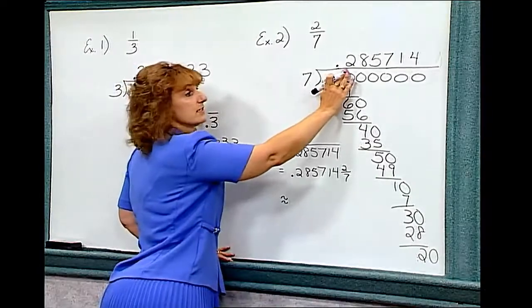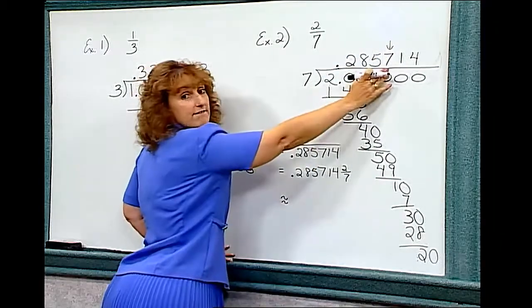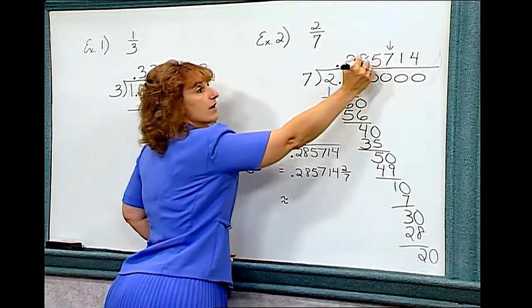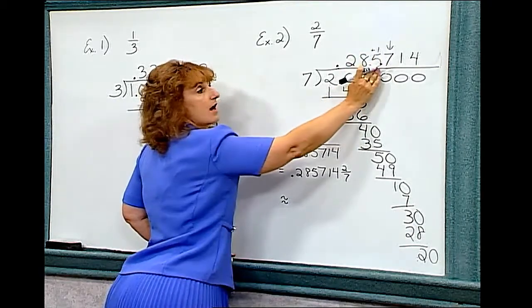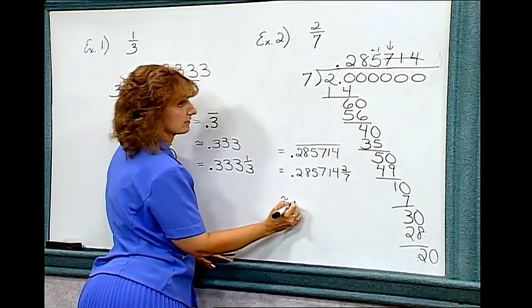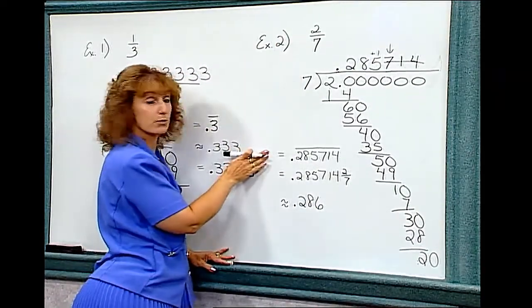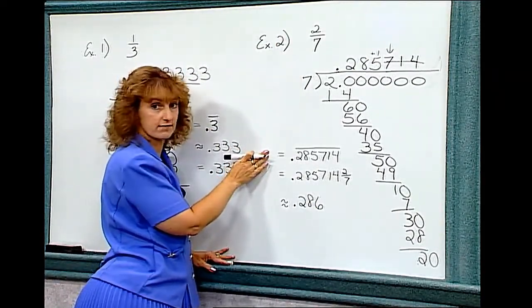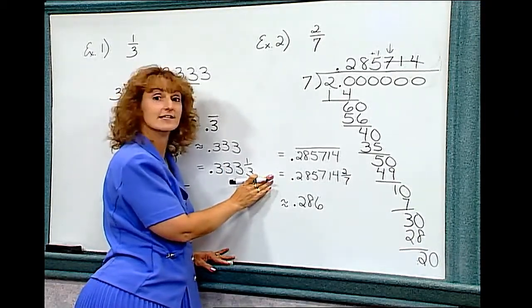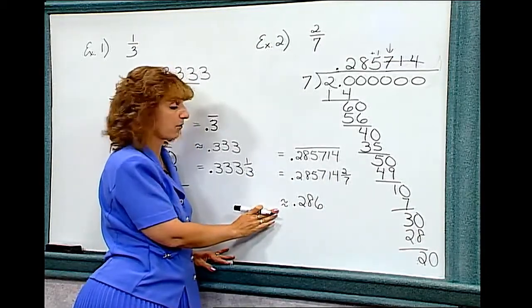If I'm rounding to the ten, hundred, thousandth, I look at this number. Seven is larger than five, so I'm going to add one to this column and drop the rest. So I would get point two eighty-six. Two-sevenths is equal to point two eight five seven one four repeating. It's equal to point two eight five seven one four and two-sevenths, and it's approximately point two eight six.